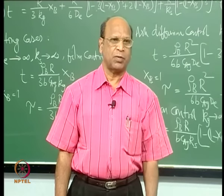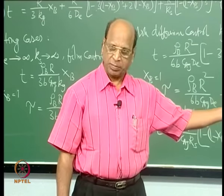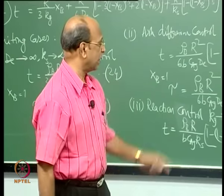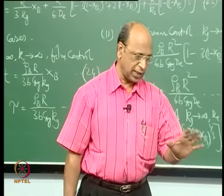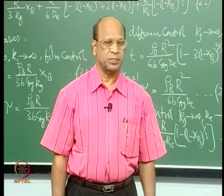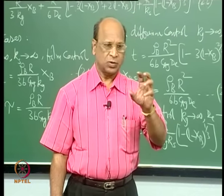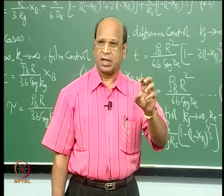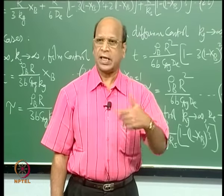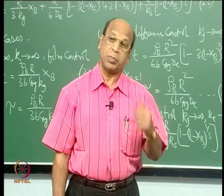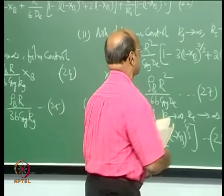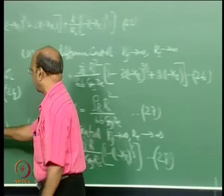Take a realistic example: iron ore reduction. Take an Fe₂O₃ or Fe₃O₄ particle, send hydrogen around it, and the reaction takes place. To know complete conversion, we wait until the reaction is fully done — this total time is what we call tau.